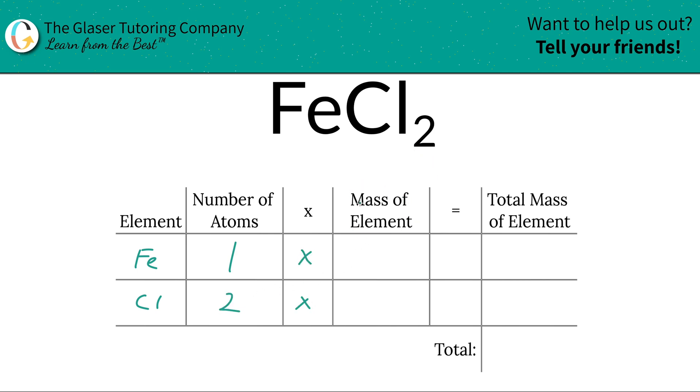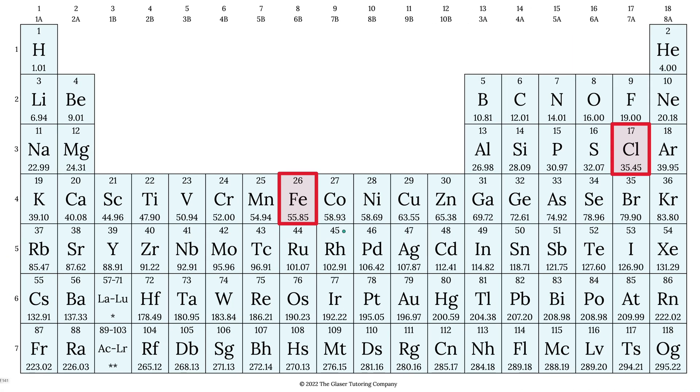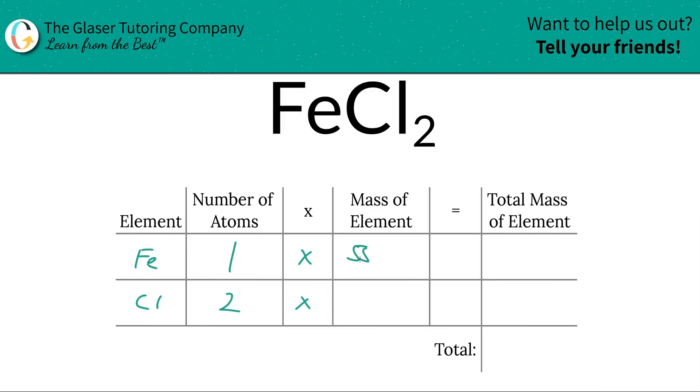Next, we're going to multiply it by the mass of the element. These masses are found on the periodic table. Let's take a look. Iron's mass is 55.85 and chlorine is 35.45. So we're going to write those in. 55.85 for iron, and chlorine is 35.45.